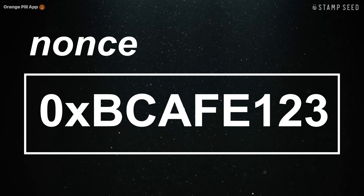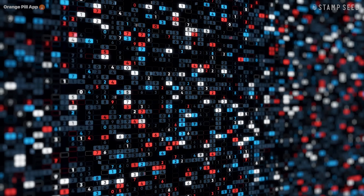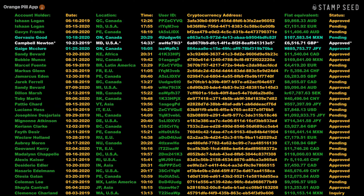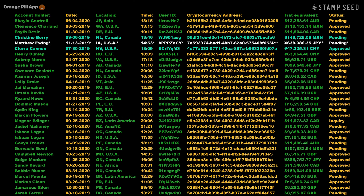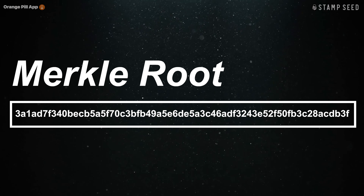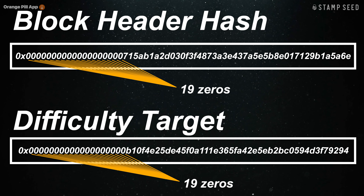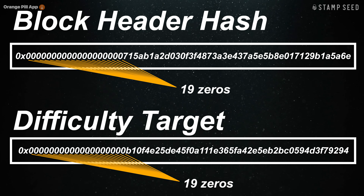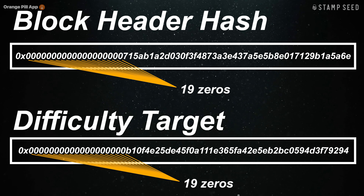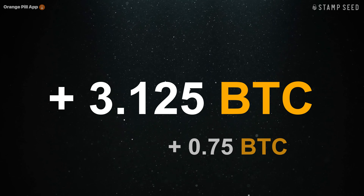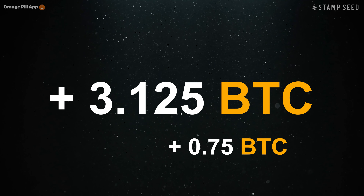Miners around the world are independently and simultaneously trying different nonce values and recalculating the hash for the block header. When a miner successfully finds a nonce that produces a hash lower than the difficulty target, they have solved the block and can broadcast it to the network. Other nodes will then verify the new block and its transactions, checking the Merkle root and confirming that the hash meets the required target. Once the new block is accepted by the network, the miner receives a block reward and any transaction fees from the transactions included in the block.